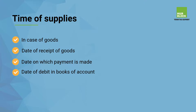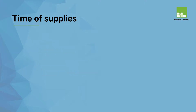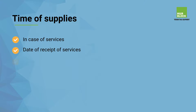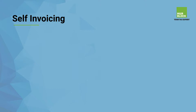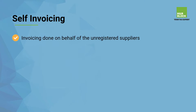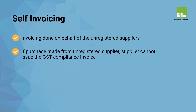In case of services, the time of supply is determined by: date of receipt of services, date on which payment is made, and date of debit in books of accounts. Also covered is self-invoicing — invoicing done on behalf of the unregistered suppliers when a purchase is made from unregistered suppliers.